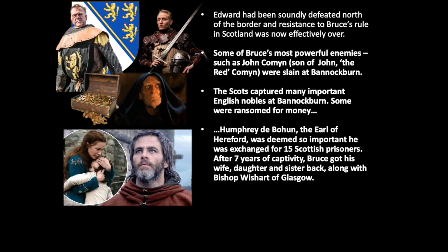So Bruce had removed remaining thorns in his side and some pretenders to his throne. He had won back old supporters like Bishop Wishart, who had been so useful to Bruce's cause earlier in the Wars of Independence — having promised absolution for the murder of John Comyn after Bruce fled to Glasgow Cathedral following the murder in 1306. The Bishop was now old and blind, and of little actual use to the cause, but symbolically he was key.